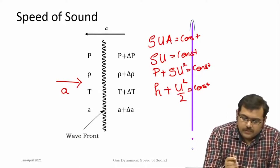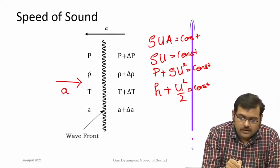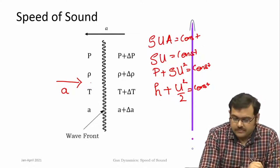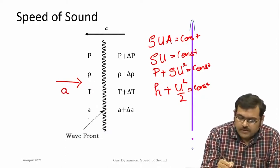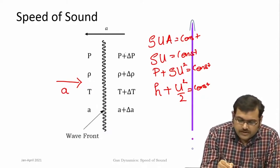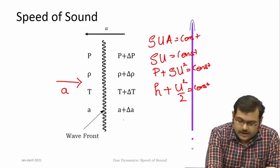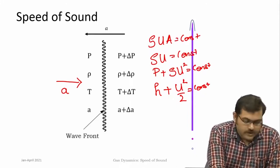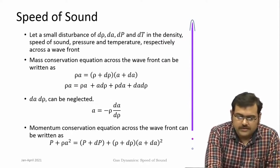As the wave passes over, as sound, it introduces a small change in the local static pressures, temperatures, and densities, as well as the speed. That small change is represented by δp, δρ, δT, and the small change δa. Now we apply these conservation equations across the disturbance.